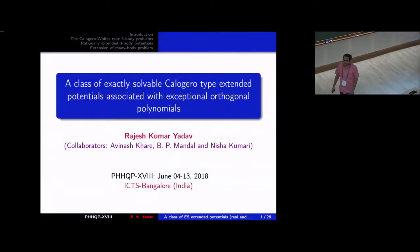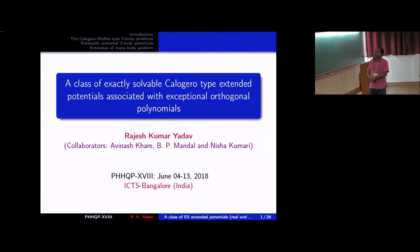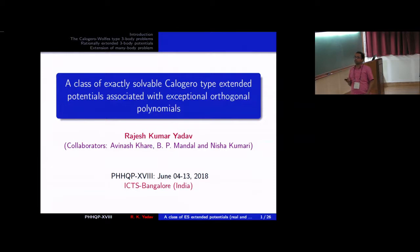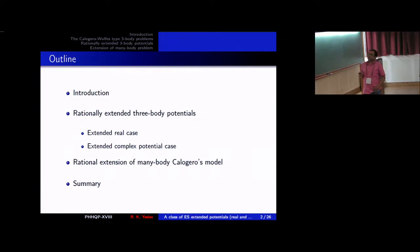Good afternoon. This is the second talk on the Calogero model. Professor Khare has discussed in detail about different models. Here we consider simple three-body problems and one many-body problem, but the main aim is to get the rational extension of this Calogero model. We completed this work with collaborators Professor Avinash Khare, Professor B.P. Mandal, and Nisha Kumari. First we will discuss the normal Calogero three-body system and then the n-body system, and then the rational extension of these two models.